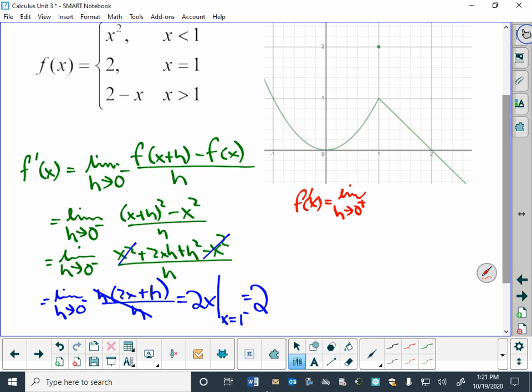Of 2 minus x plus h, so 2 minus x plus h minus the quantity 2 minus x, all over h. Which is the limit as h approaches 0 from the right of 2 minus x minus h minus 2 plus x, all over h.